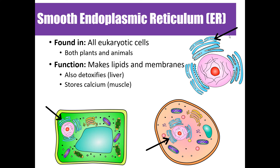The smooth ER is called 'smooth' because it doesn't have ribosomes on its surface like the rough ER does. Just like the rough ER, it's found in all eukaryotic cells — both plant and animal cells. The smooth ER attaches to the rough ER and its job is to make lipids and membranes. In liver cells it's used to detoxify, and in muscle cells it's used to store calcium.